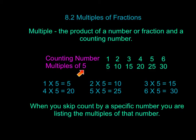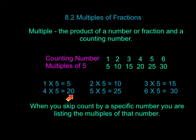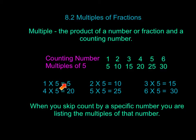So in this case, the multiples of 5 would be 5, 10, 15, 20, 25, 30 — because 1 times 5 is 5, 2 times 5 is 10, 3 times 5 is 15, 4 times 5 is 20, 5 times 5 is 25, and 6 times 5 is 30. So because a product is the answer to a multiplication problem, our multiples are going to be answers of our 5 with our counting numbers.